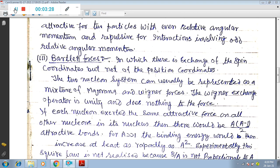The binding energy would then increase at least as rapidly as A squared. Experimentally this square law is not realized because B upon A, binding energy per nucleon, is not proportional to A.